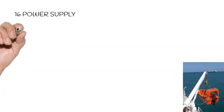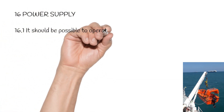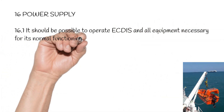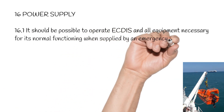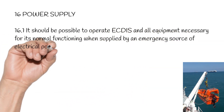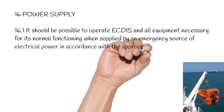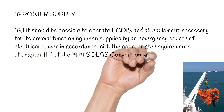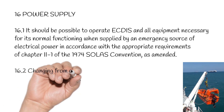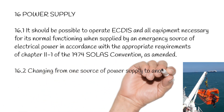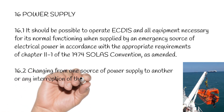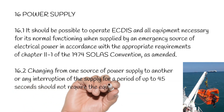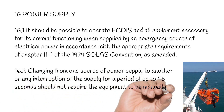Section 16: Power Supply. 16.1. It should be possible to operate ECTIS and all equipment necessary for its normal functioning when supplied by an emergency source of electrical power in accordance with the appropriate requirements of Chapter 2-1 of the 1974 SOLAS Convention, as amended. 16.2. Changing from one source of power supply to another, or any interruption of the supply for a period of up to 45 seconds, should not require the equipment to be manually reinitialized.